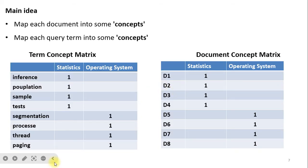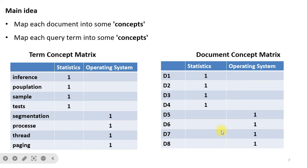There is a term-concept matrix and a document-concept matrix; we need to map from the term-concept matrix to the document-concept matrix. Here, eight keywords are present — the first four are related to the concept of statistics and the next four are related to the concept of operating systems. In the document-concept matrix, there are eight documents in the repository: the first four are related to statistics and the next four are related to the operating system concept.